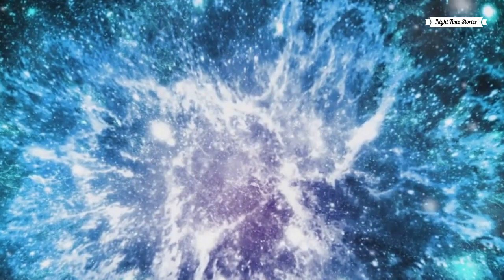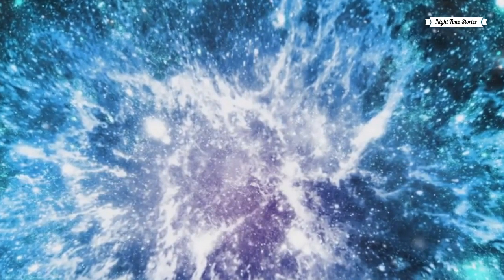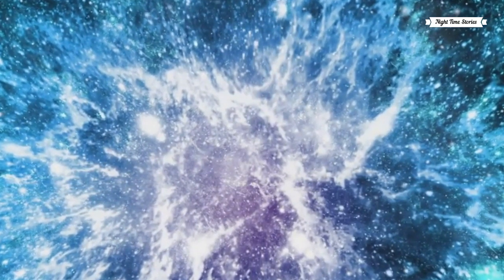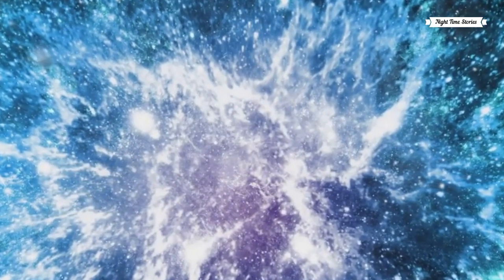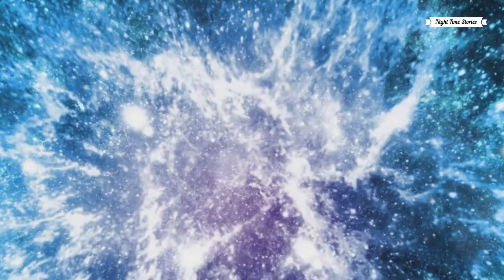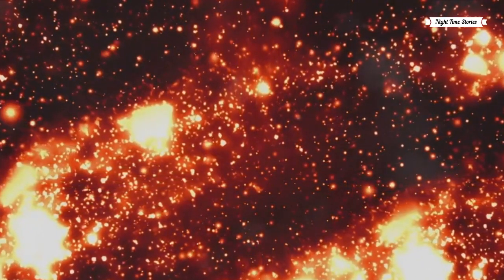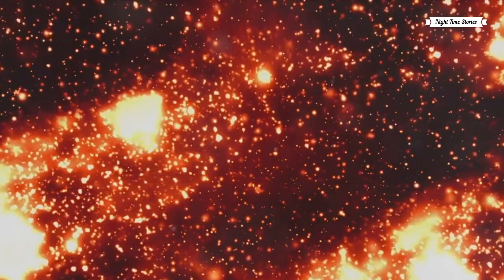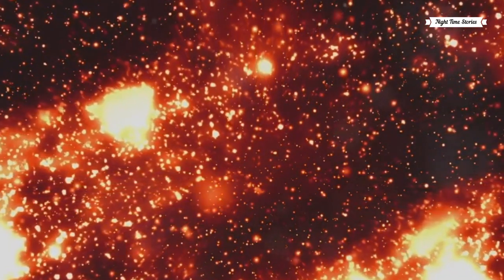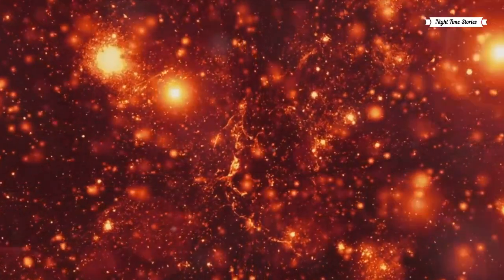Imagine the universe as a vast unseen ocean, and the Higgs field as the water. Particles move through this ocean, and as they do, they interact with the Higgs field. Now, different particles interact with the Higgs field in different ways. Some particles, like photons, simply pass through without any interaction. These are the particles that remain massless.